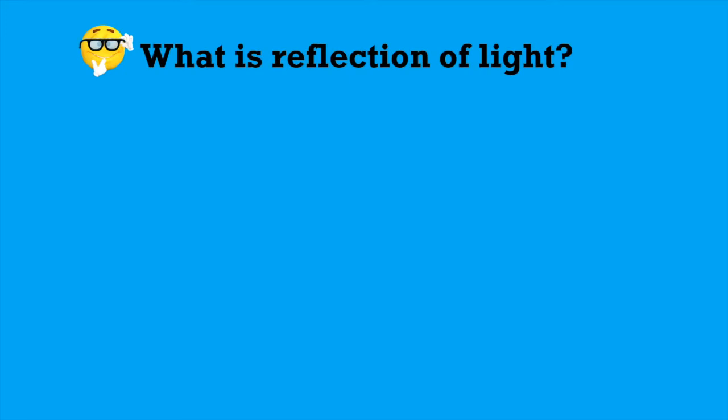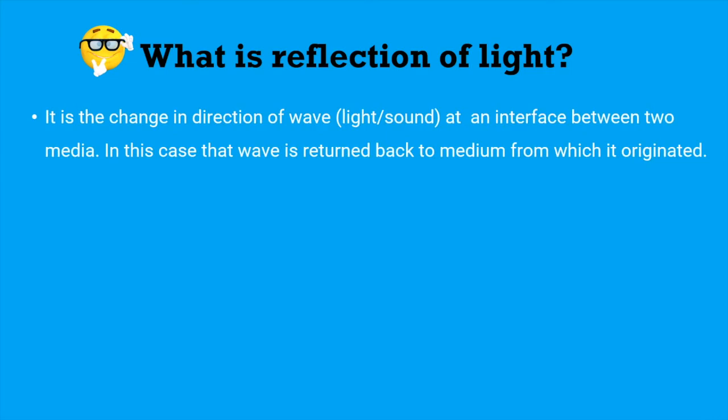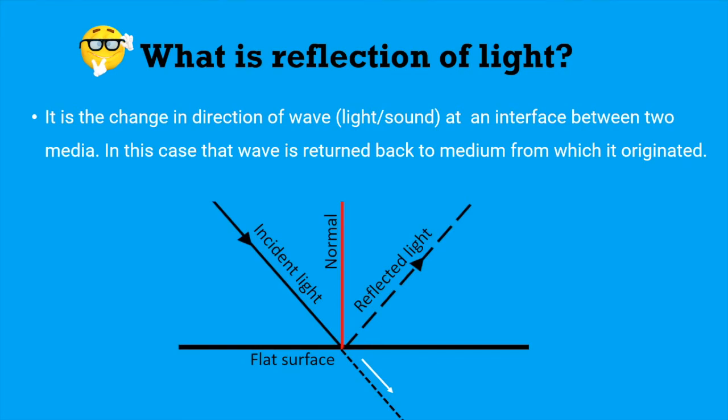Next, what is reflection of light? It is the change in direction of wave, either light or sound, at an interface between two medium. In this case that wave is returned back to medium from which it originated. This ray diagram shows how incident light instead of passing straight gets reflected from the flat surface and goes back to its original medium.